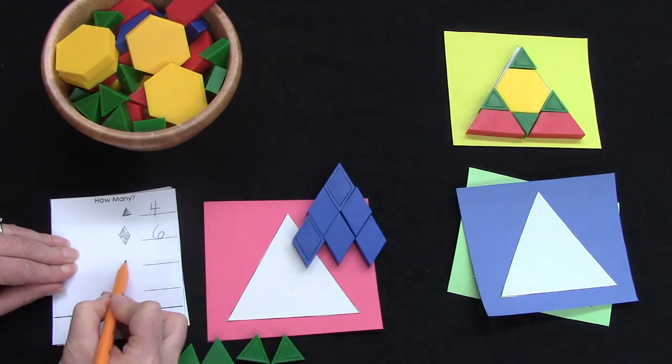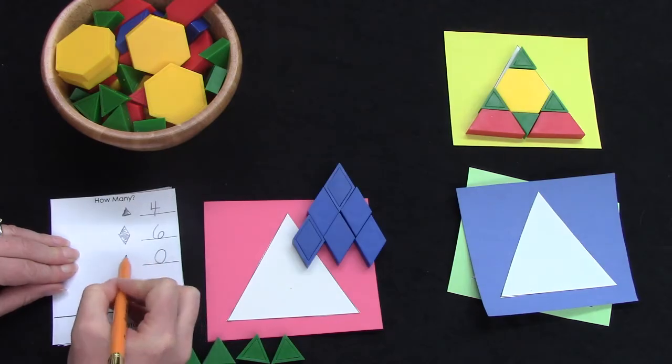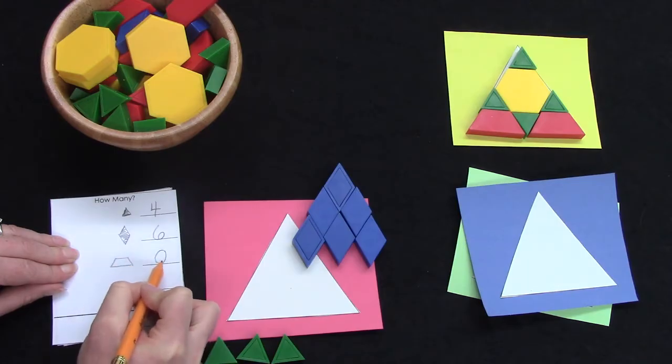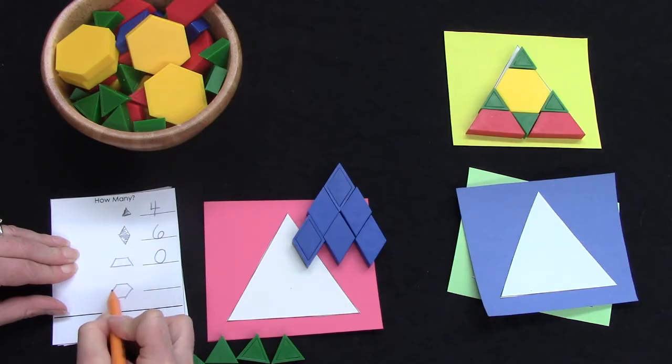Well, did I use any other types of shapes? No. So I could say, for trapezoids I used zero and for hexagons I used zero.